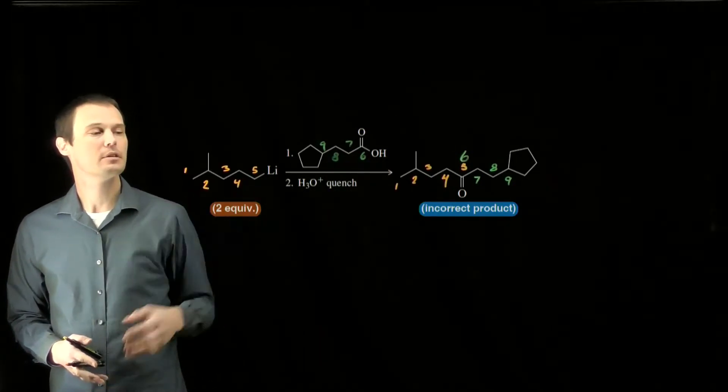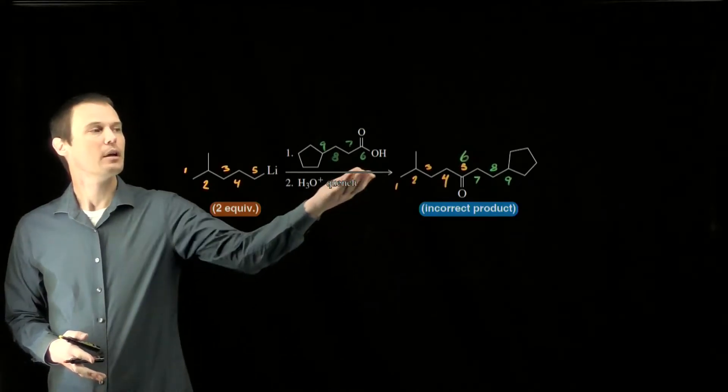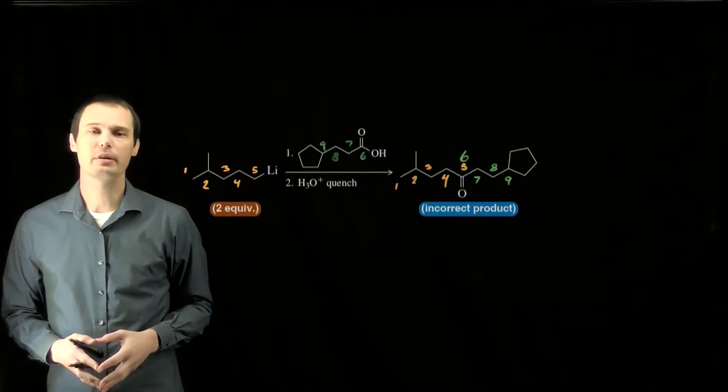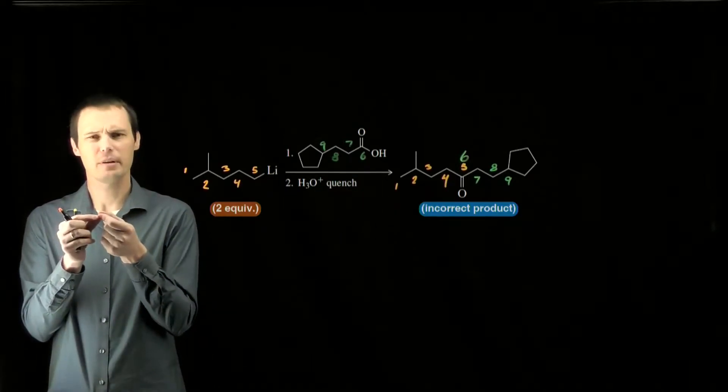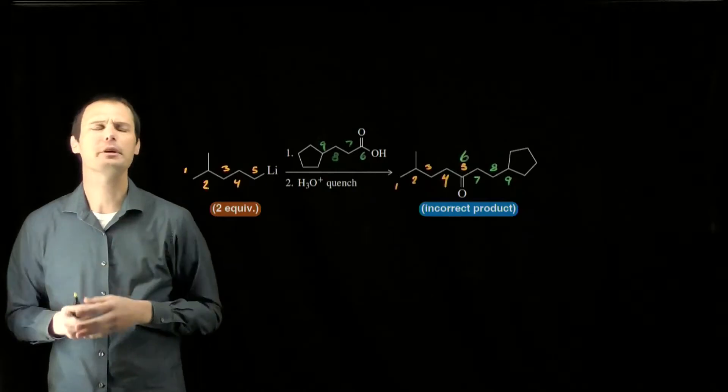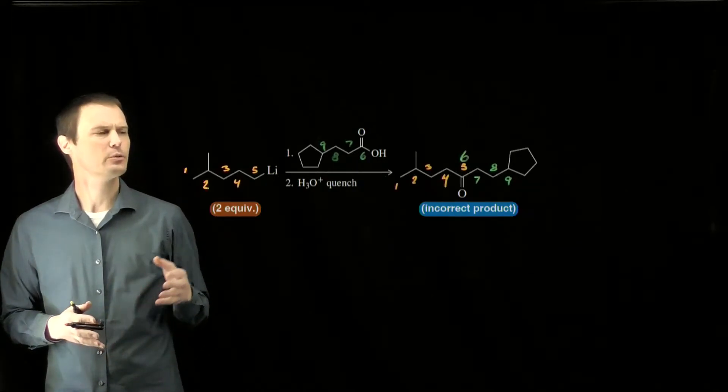There are five carbons in the linear chain of the alkyl lithium and four carbons in the linear chain of the carboxylic acid, and yet in the product that is drawn, carbon 5 and carbon 6 have become the same carbon, and that can't be. That's not how these reactions work.